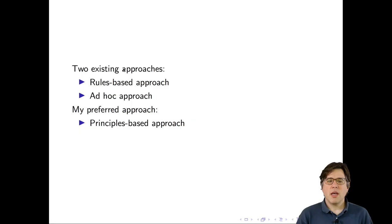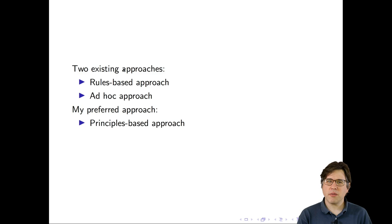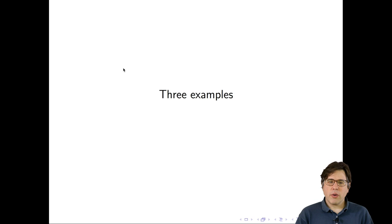In chapter six of Bit by Bit, I advocate for what I call a principles-based approach, where we follow certain ethical principles. The good news is that we don't have to make up those principles ourselves — they've already been developed by the research ethics community. To discuss these ethical principles and the kinds of research ethics challenges that arise, I want to start by talking about three real computational social science studies that have been the subject of ethical commentary.